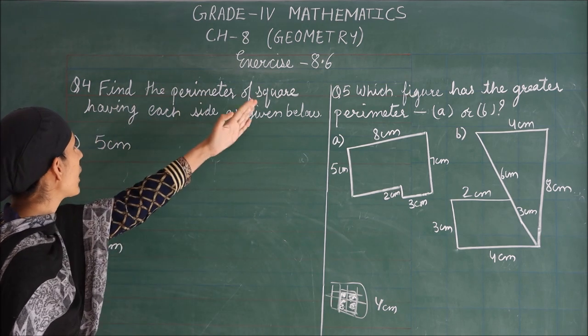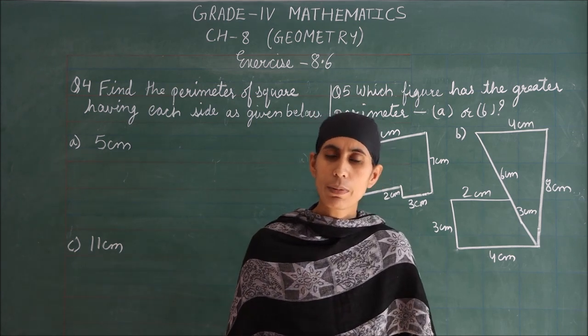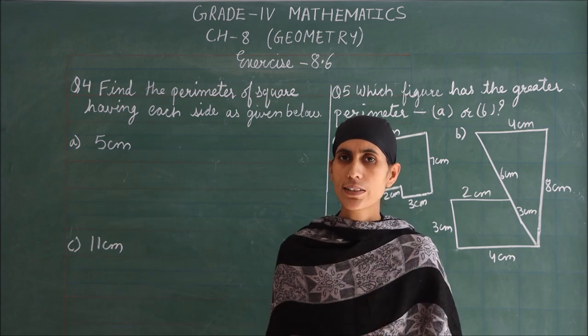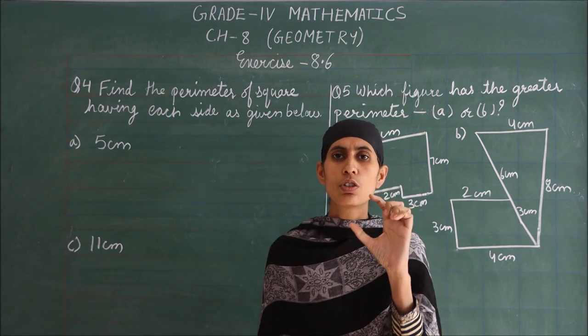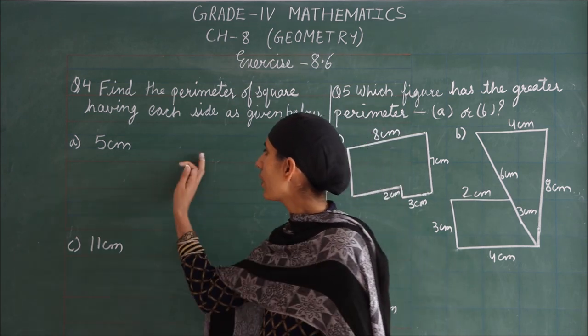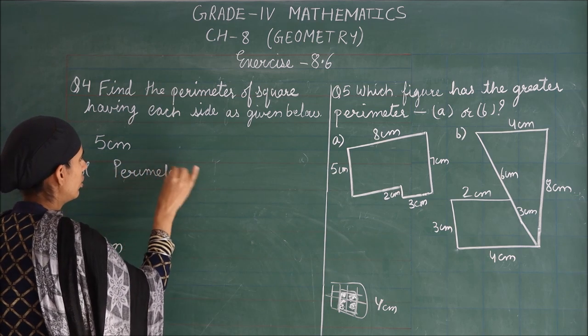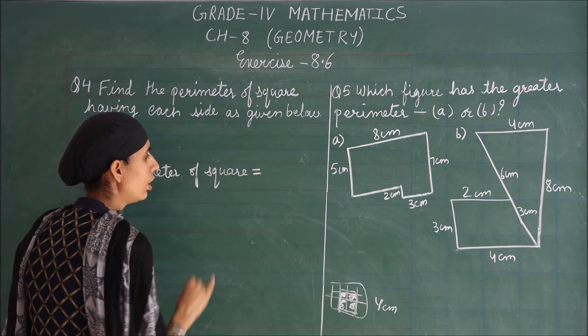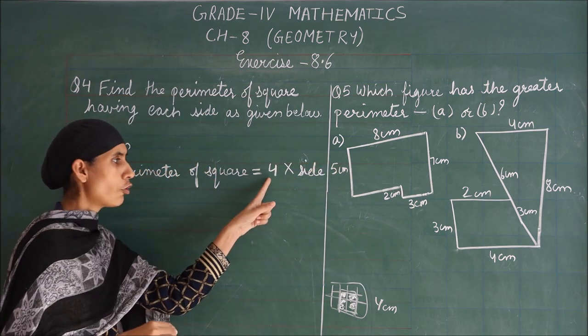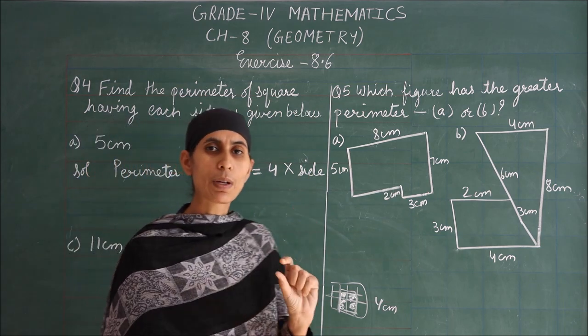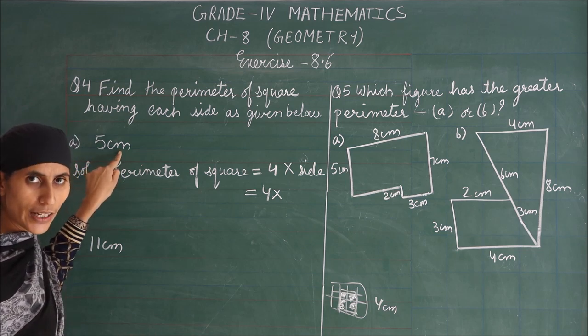Now, come to question number 4. Find the perimeter of a square having each side as given below. First of all, let us know the formula for perimeter of square. A square has how many sides? 4. So, perimeter of square equals 4 multiplied by side. If we have 4 sides, we multiply 4 by the length of one side.